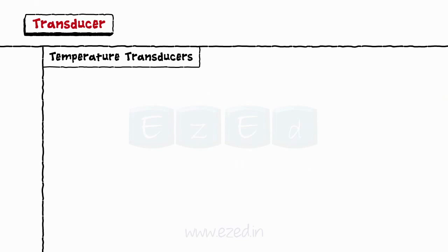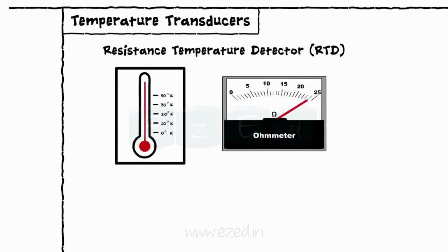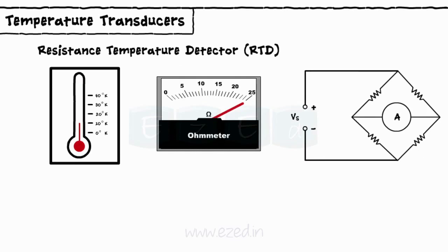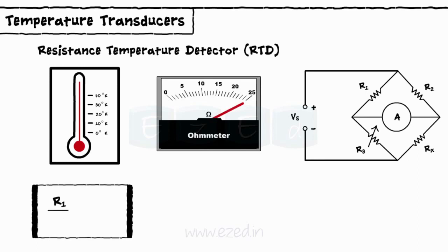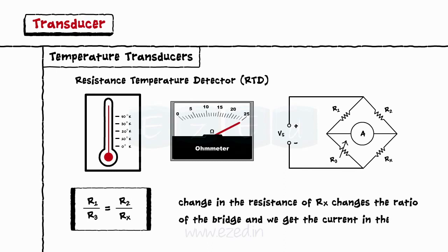The next temperature transducer is a resistance temperature detector or RTD. RTD is a sensor whose resistance changes with temperature. As we can see in the circuit, resistances R1 and R2 are fixed, R3 is variable, and Rx is the RTD. The ratio of the bridge becomes R1 upon R3 equals R2 upon Rx. Thus, a change in the resistance of Rx changes the ratio of the bridge and we get the current in the circuit.